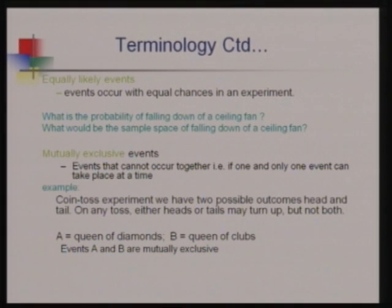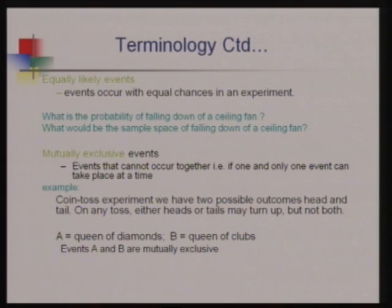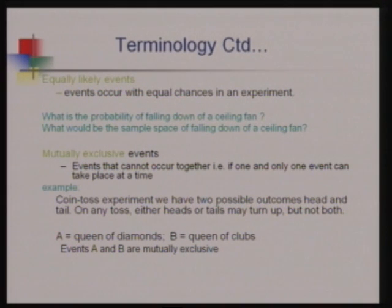Related to events, we define different kinds. Equally likely events are a requirement to calculate probability. Second is mutually exclusive events — when one or more events cannot all appear together. For example, in tossing a coin, head and tail form the sample space, but if head appears, tail cannot appear at the same time. You cannot have both events occur simultaneously, so these events are said to be mutually exclusive.